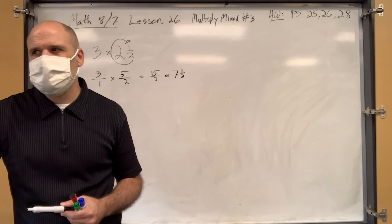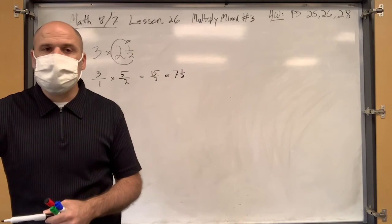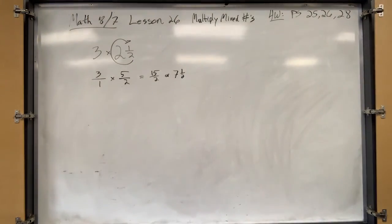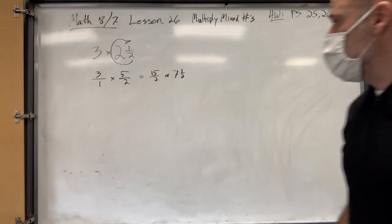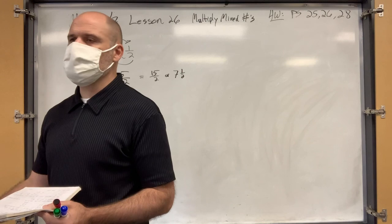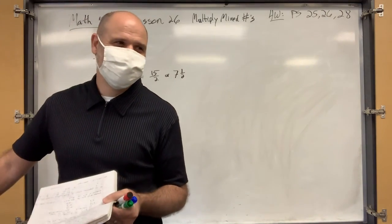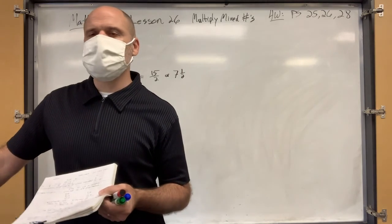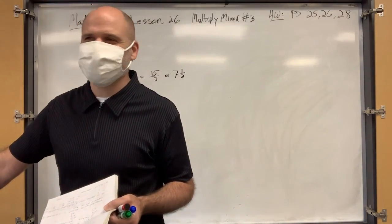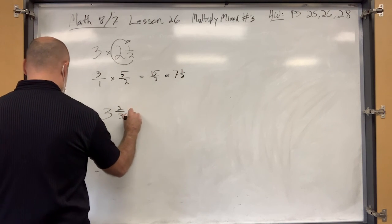So how do you multiply mixed numbers? You don't — change them to improper fractions first, and then multiply. I'm going to do three more examples and then we'll be done for the day. You'll have the rest of the time to work on your classwork.